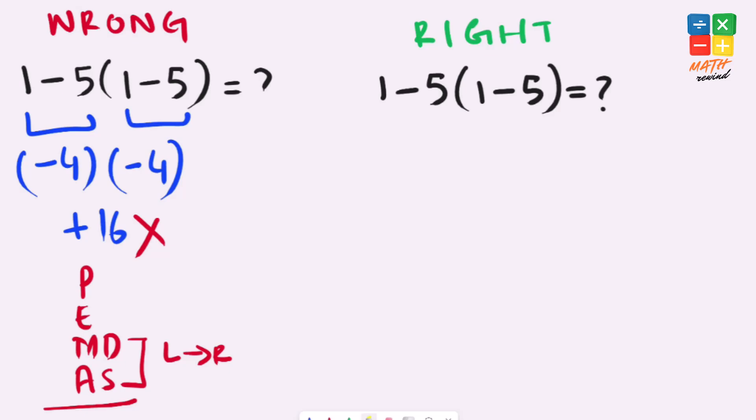Now let's rewind and solve this problem the right way. In this expression, we have parenthesis present, which means we must solve what's inside the parenthesis first. 1 minus 5 gives us negative 4.